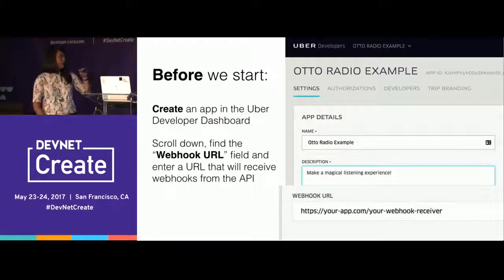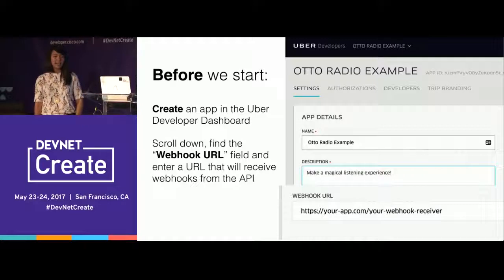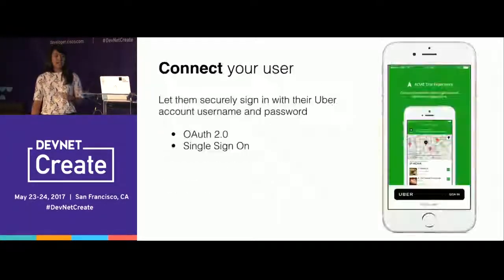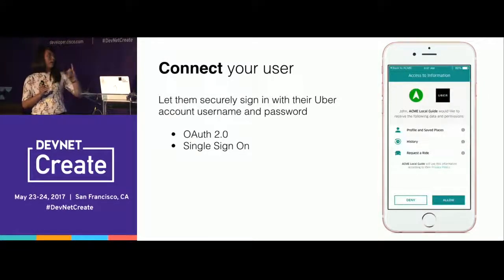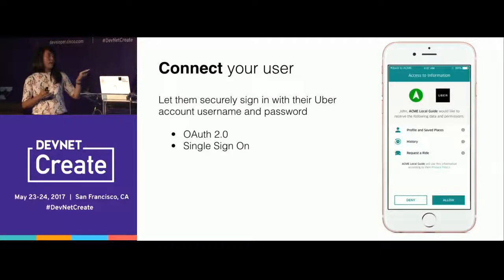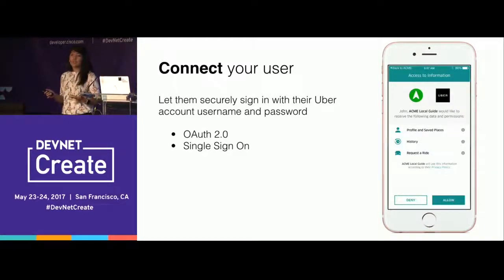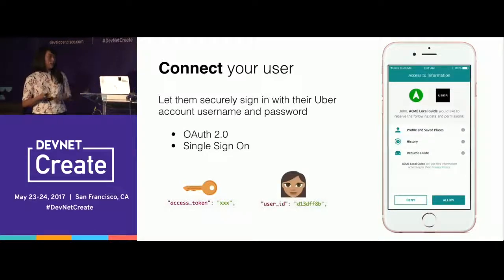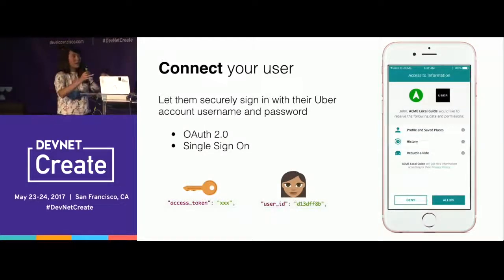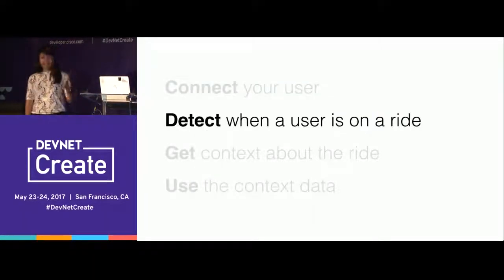Before you start, create an app in the Uber Developer Dashboard, scroll down, find the webhook URL — this is where you'll receive those notifications. For the first step, connect your user to your app. You'll prompt the user to connect their Uber account, and using OAuth 2.0 or single sign-on you get a permission screen where the rider sees what information will be shared. When they click Allow, you'll get their Uber access token and Uber user ID, which your app can persist.